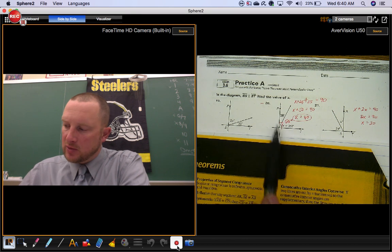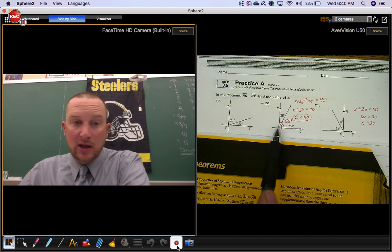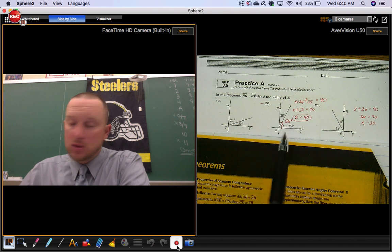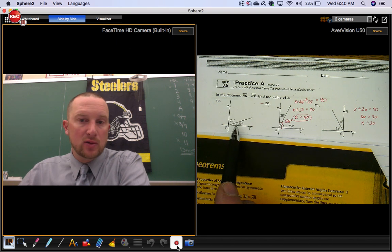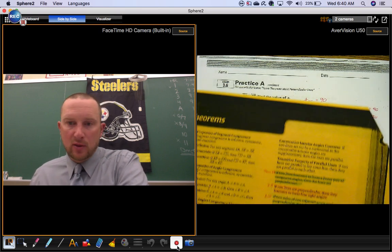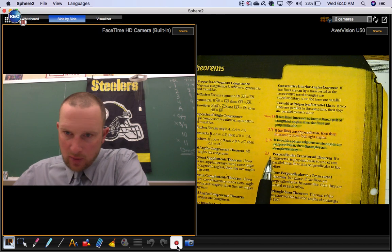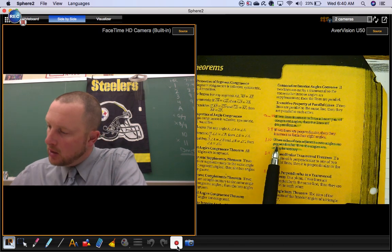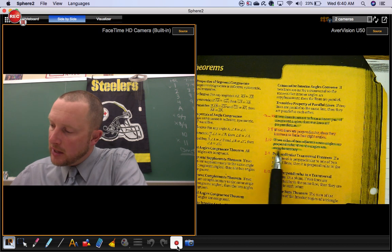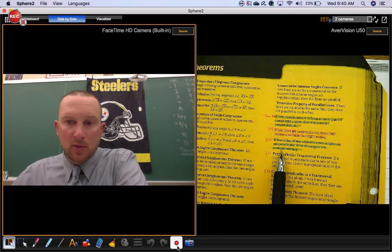So what happens there is, when you have perpendicular lines, you're going to end up with right angles. So you're going to have two acute angles that make a right angle. And we have a theorem, theorem 3.10, that tells you if two sides of two adjacent acute angles are perpendicular, then the angles are complementary.